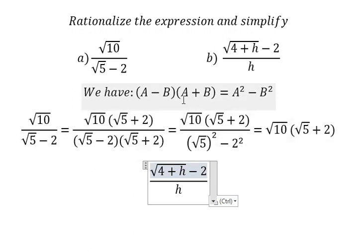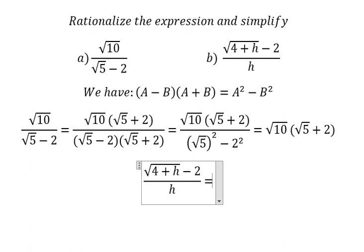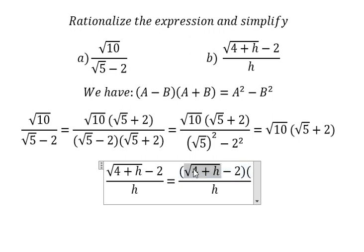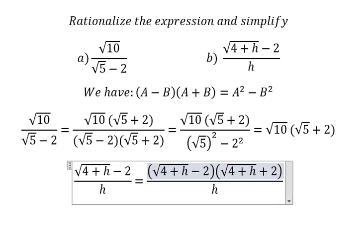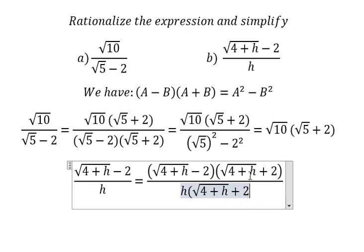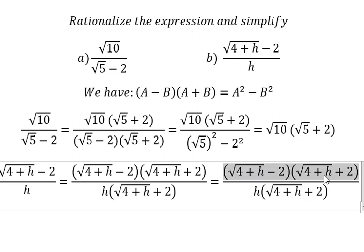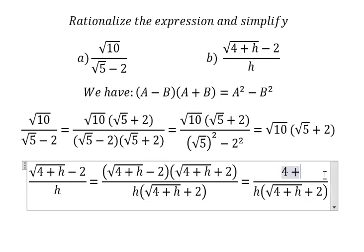So we need to multiply by a plus b. So we have like this. This one, that is about 4 plus h minus 4, and this one we can show 4 in here.